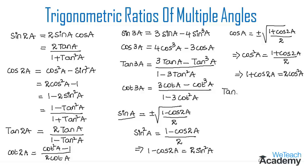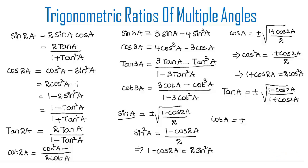Tan A is given by plus or minus under root of (1 minus cos 2A) divided by (1 plus cos 2A). We can get this formula by dividing the formula for sin A by cos A. Similarly, cot A, which is the reciprocal of tan A, equals plus or minus under root of (1 plus cos 2A) divided by (1 minus cos 2A).